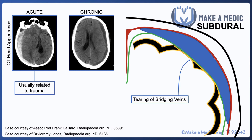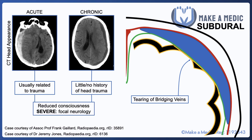Acute subdurals tend to have a clearer relationship with some sort of head trauma, whereas chronic subdurals may not have any clear head trauma at all, because it can take quite a bit of time to develop and cause any symptoms. They do both tend to present relatively similarly with reduced consciousness, and in severe cases that may cause a midline shift, it can present with focal neurology.